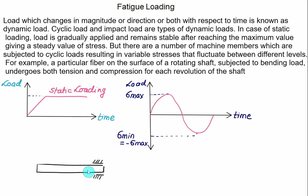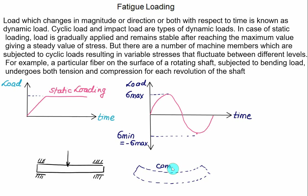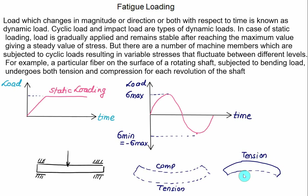Another example: a shaft transmitting power, supported by bearings, bends under load. In one position the top fiber is in compression and the bottom fiber is in tension. As the shaft rotates 180°, the top fiber becomes tension and the bottom fiber becomes compression. So at point A (top fiber), stress varies from compression to tension — from negative to zero to positive — and at point B (bottom fiber), stress increases from zero to maximum then becomes negative.